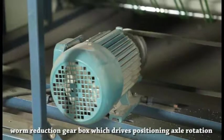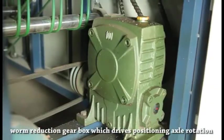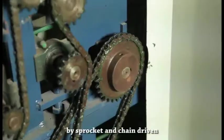The motor belt connects with worm reduction gearbox, which drives the positioning axle rotation by sprocket and chain.